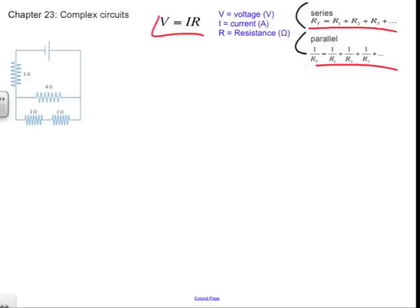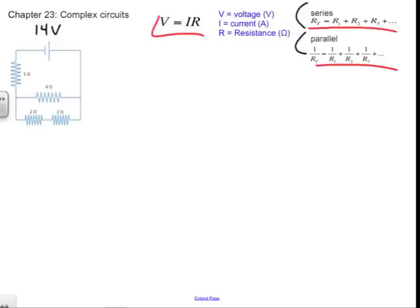Now let's move to our more complex circuit with a 14-volt power supply. It doesn't have to be more complicated — just a few more steps. Some resistors are in series because current has no choice but to pass through both. Other elements are in parallel because current can go down one path or another, then recombine.